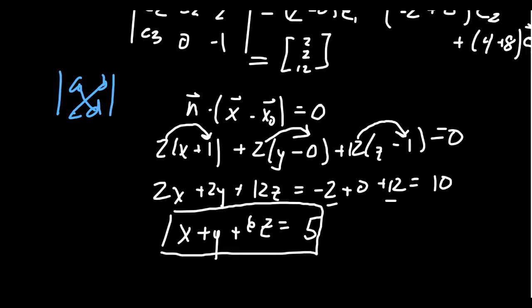Do you have to use cross products to find normal vectors? Absolutely not. Can you? Sure — it can be helpful. When you're in R3, feel free to use cross products or determinants. Although I think the approach in the previous example probably works a little bit better in general. Thanks for watching this video. If you have any questions, please post them in the comments below. Feel free to subscribe and like if you want to see more of these. I'll see you next time.